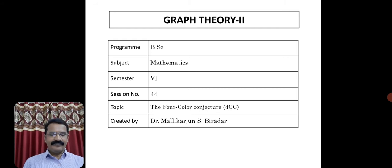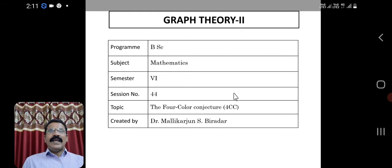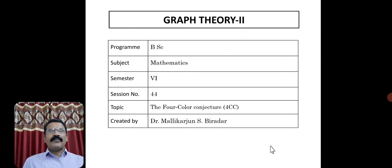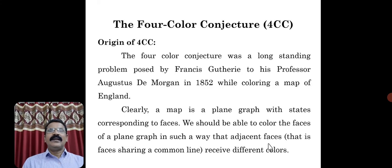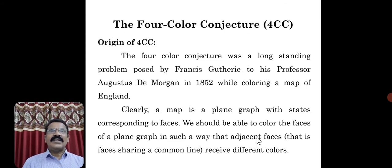What is the Four-Color Conjecture and how did we get this idea? What was the initiative for this? Let us think of the origin of the Four-Color Conjecture. Actually, the Four-Color Conjecture was a long-standing problem posed by Francis Guthrie to his professor Augustus De Morgan in 1852 while coloring a map of England.